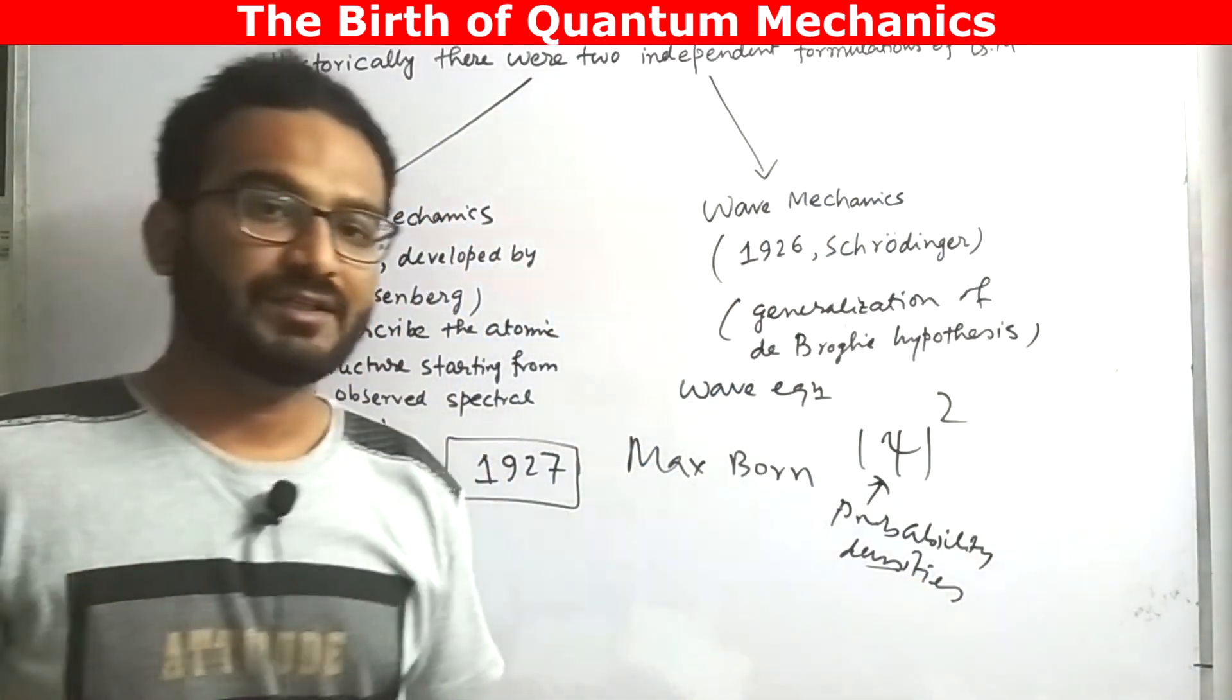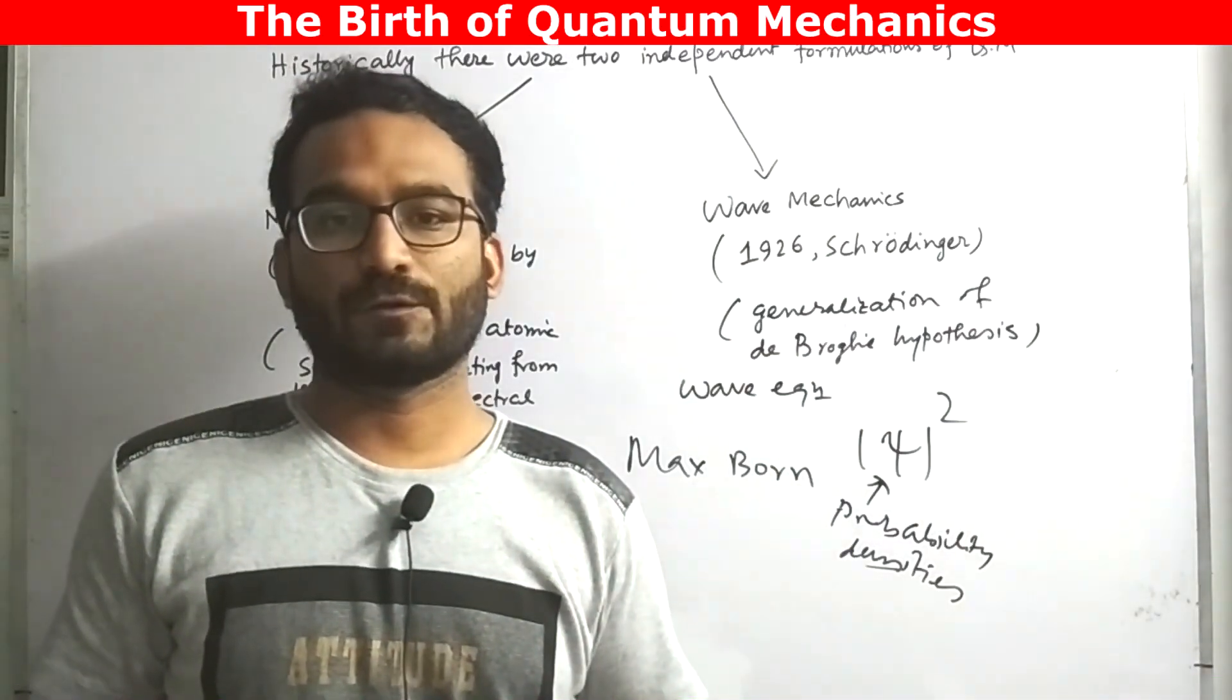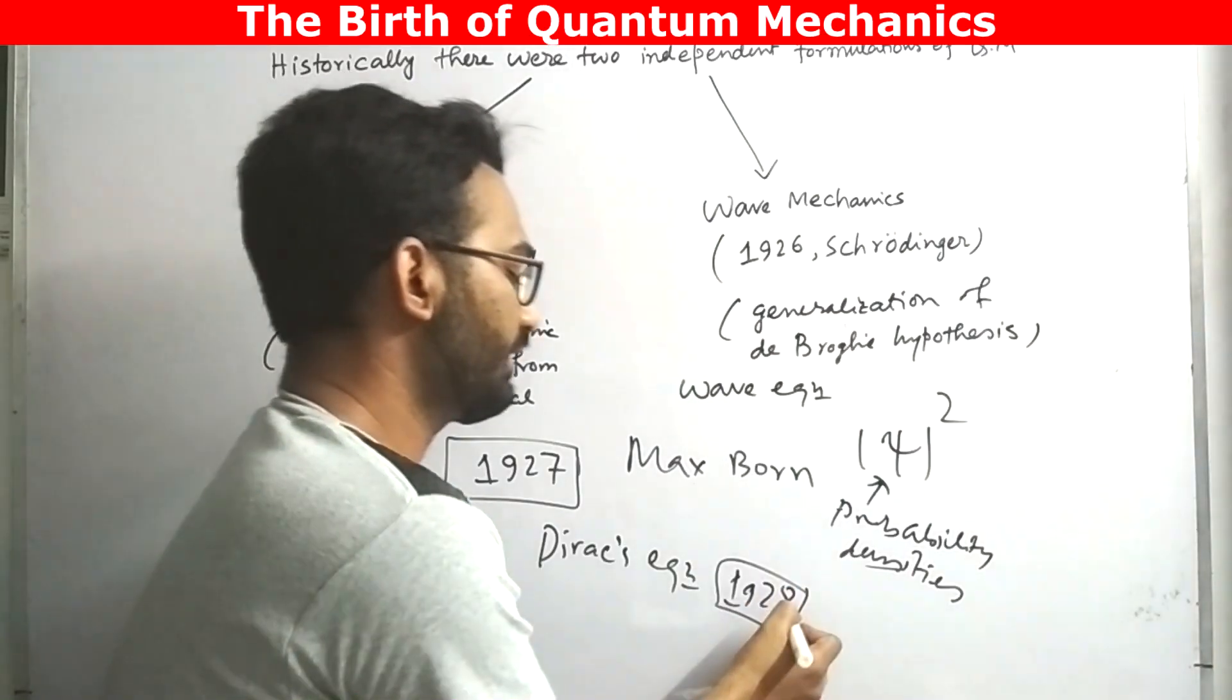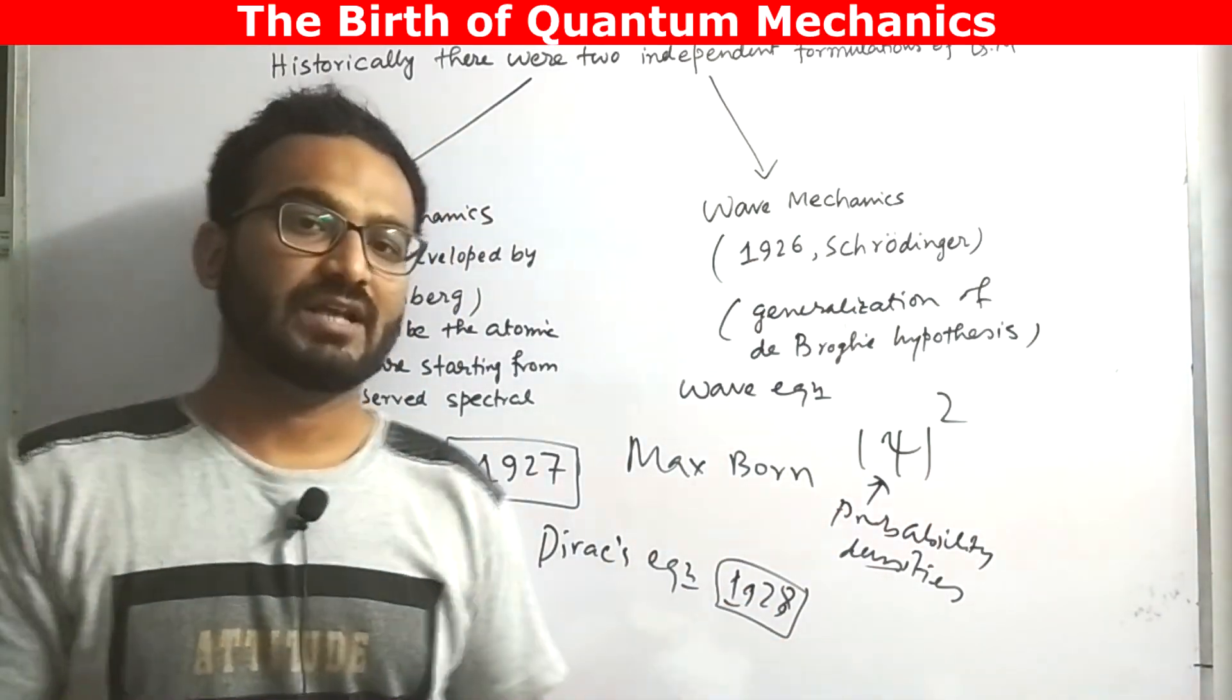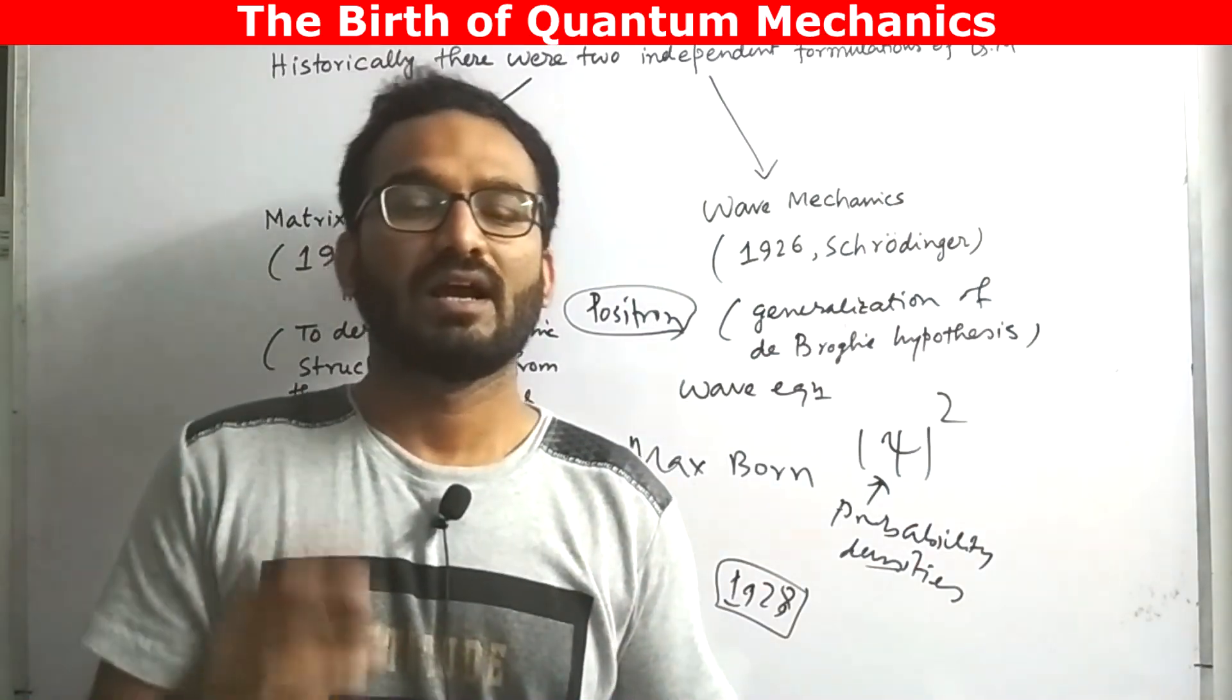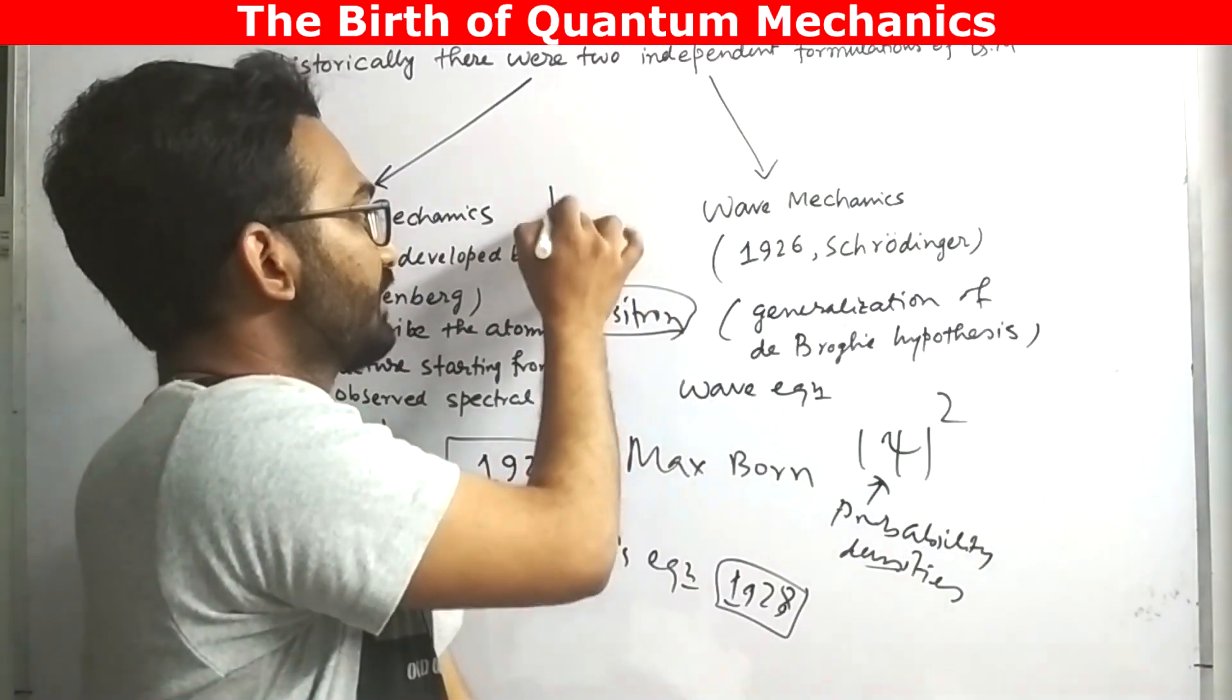Later on, in the year 1928, Dirac postulated his Dirac equation, which was designed to describe the motion of electrons. From that equation, Dirac predicted an antiparticle of electron, which is called positron, which has the same characteristic as the electron but of opposite nature. This positron was later discovered in 1934.